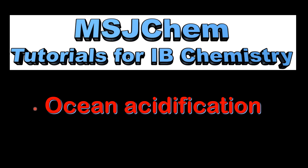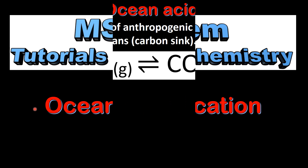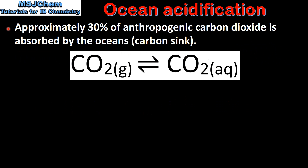This is MSJChem. In this video I'll be looking at ocean acidification. Approximately 30% of anthropogenic carbon dioxide is absorbed by the oceans. Therefore the oceans are known as a carbon sink.